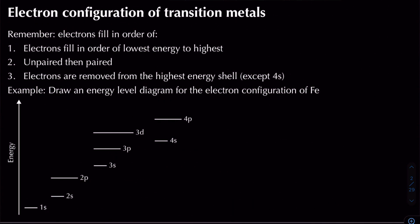Reviewing electron configuration from year one: electrons fill in order of lowest to highest energy, filling unpaired then paired for the same energy level. When removing electrons, we remove from the highest energy level — except for 4s, which is added before 3d and also removed before 3d.